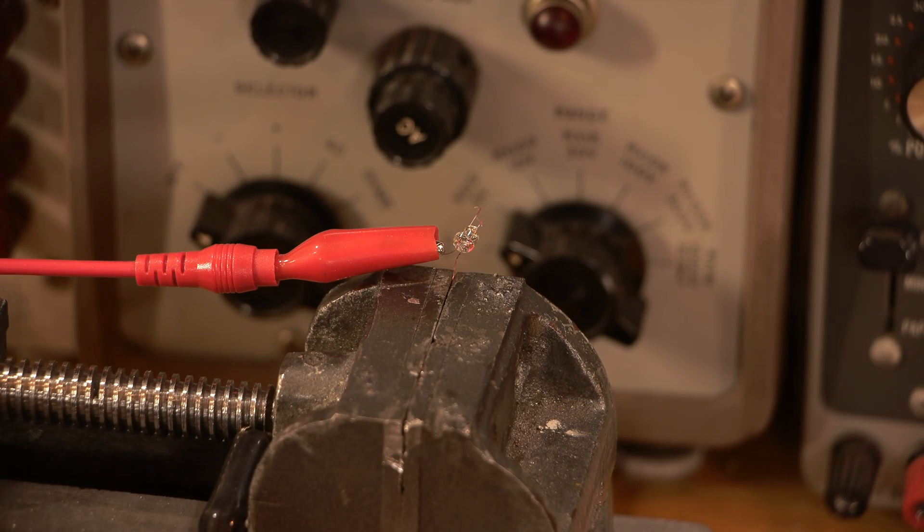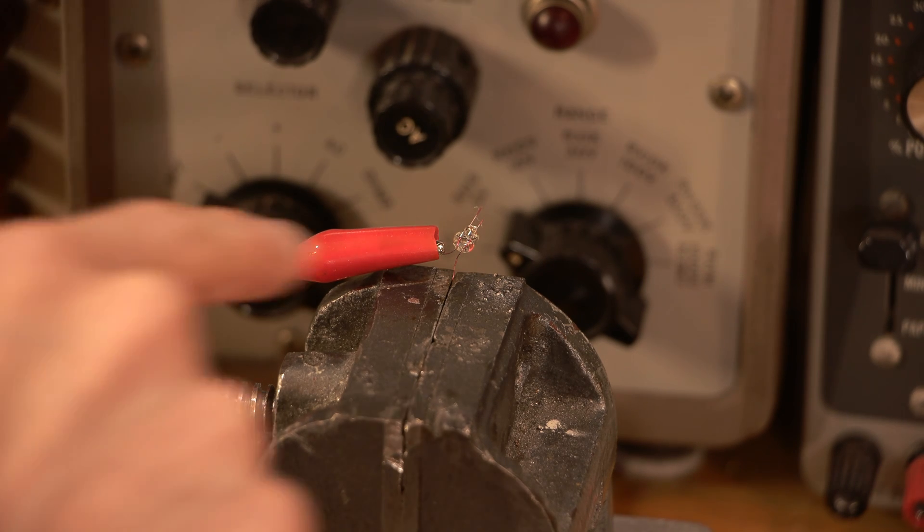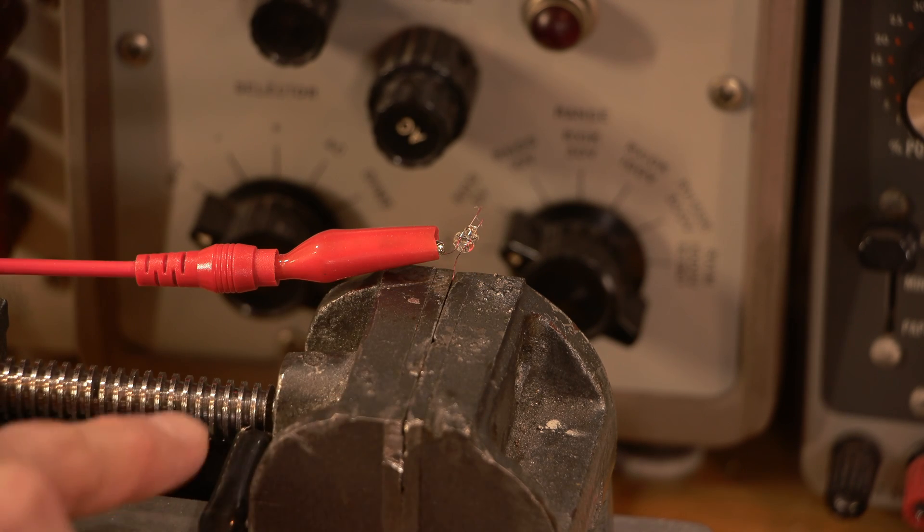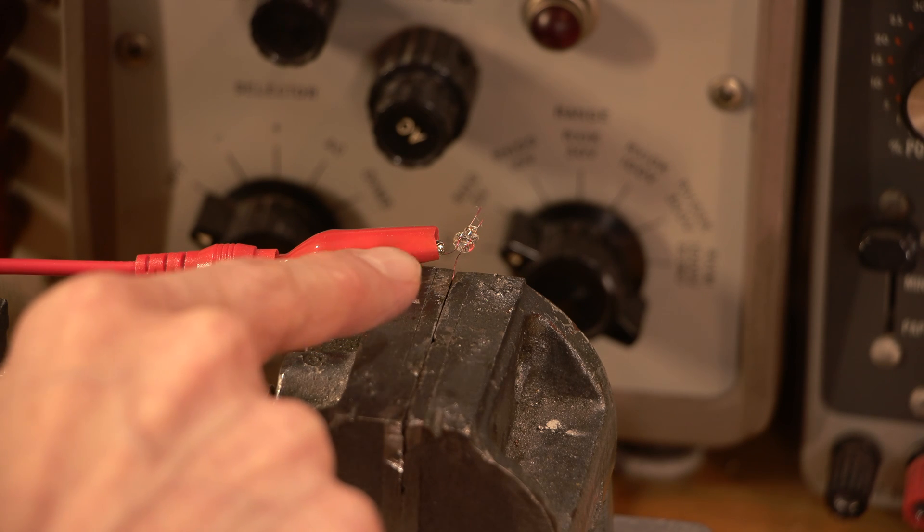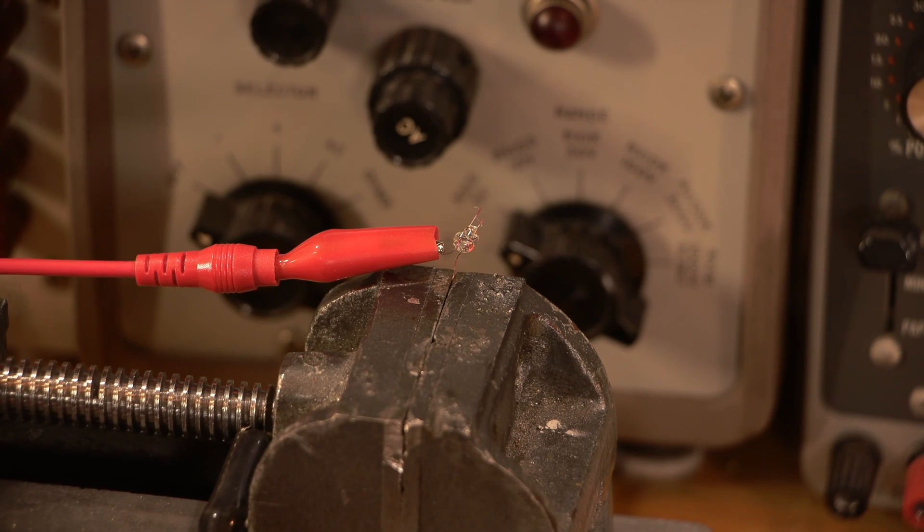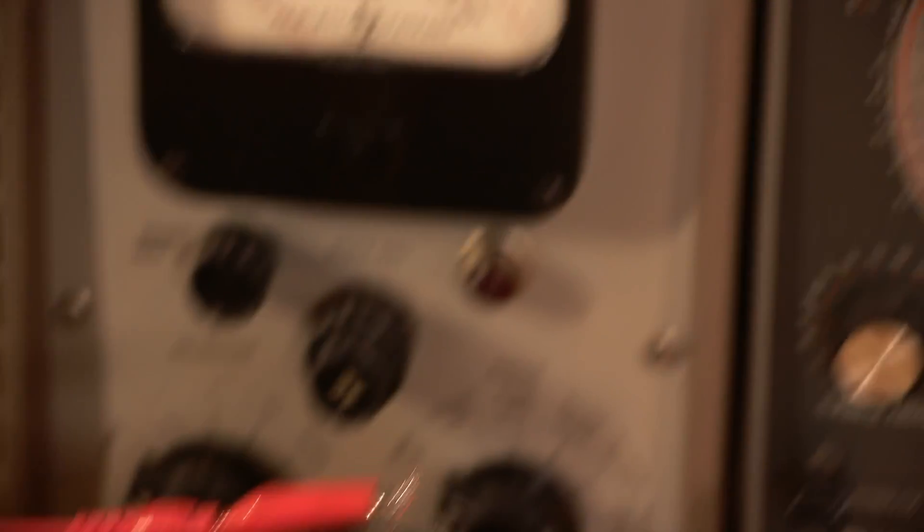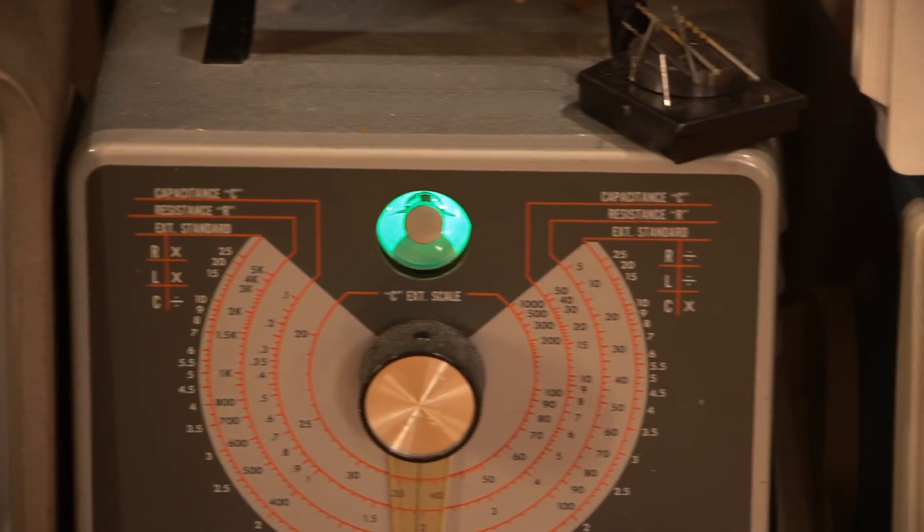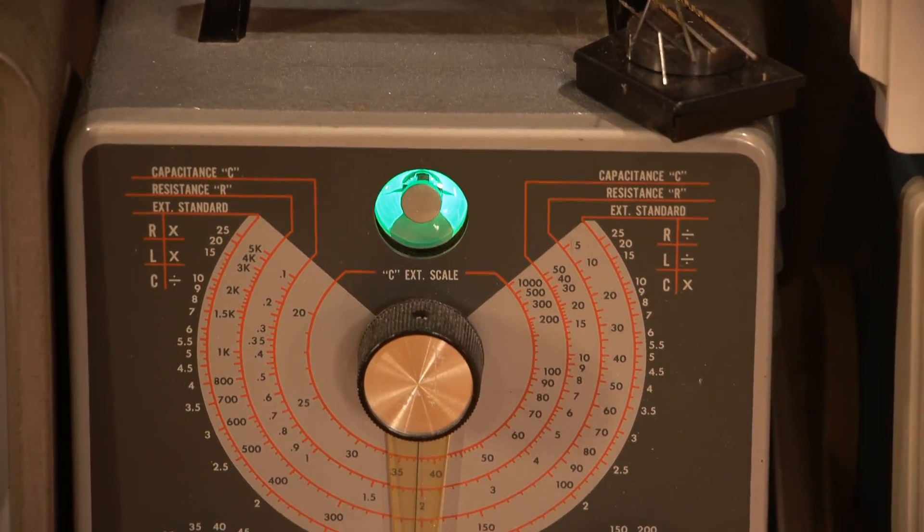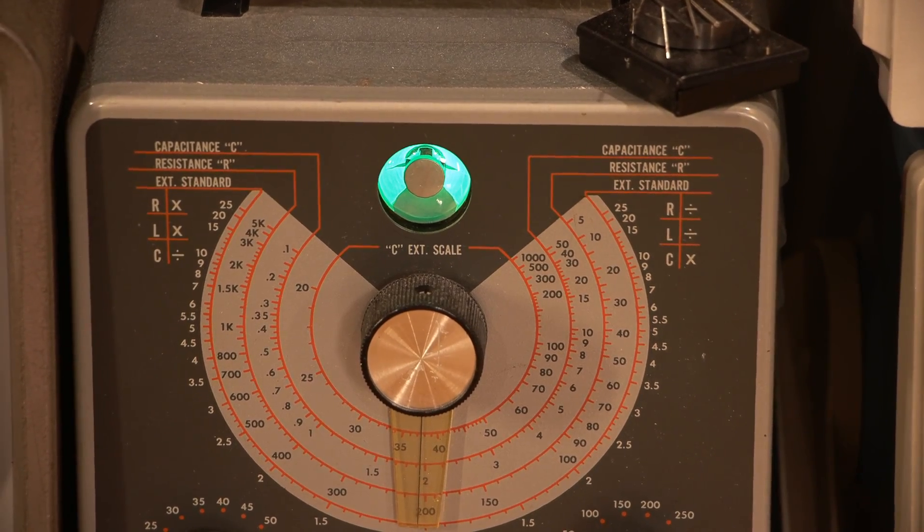I have the bulb attached to my older capacitor leakage tester, and I'm going to use that to break this down. So one lead is connected to the device and the other lead is connected to the one flying lead on the bulb there. So I'll move you over to the actual tester over here. So you can see the eye is open.